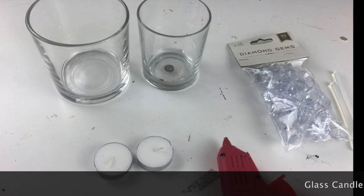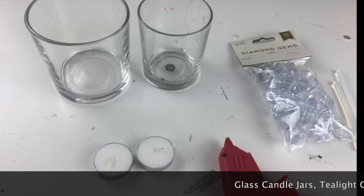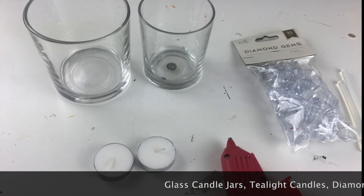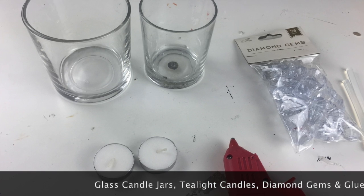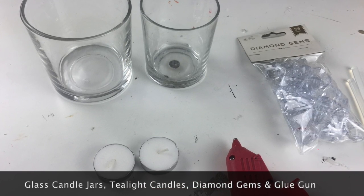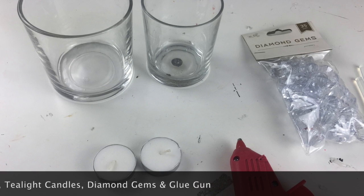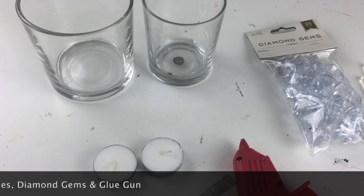So what you will need for this DIY project is glass candle jars—I'm only going to use the big one—tea light candles, diamond gems, and a glue gun. That's all you will need.